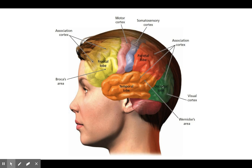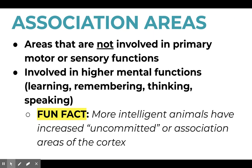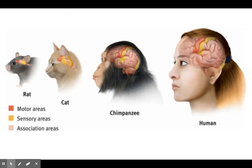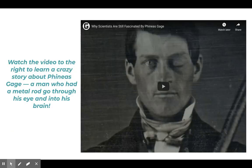Some things help with vision, some help with taste, some help with other sensations like touch. Some things are helping us remember, some things are helping us feel. It is incredible and does a lot of different things. And when one of these things is damaged, it can have a real huge impact on us.